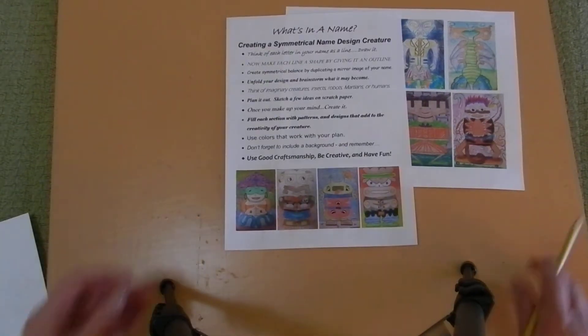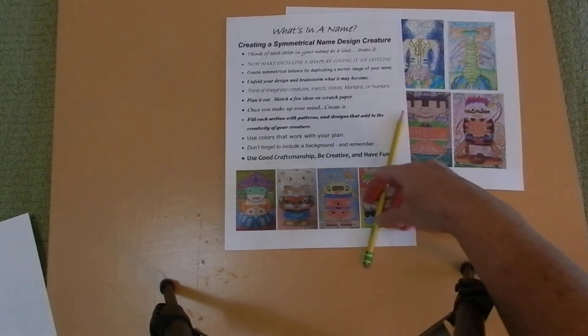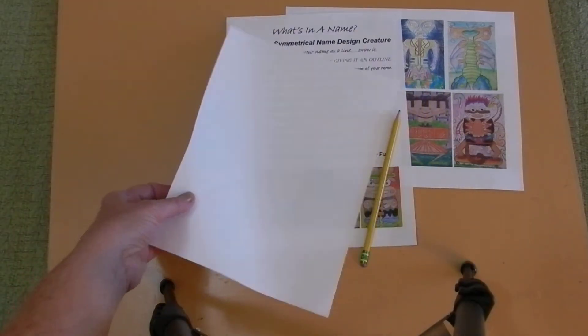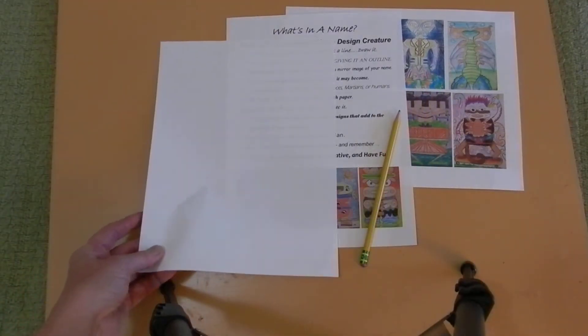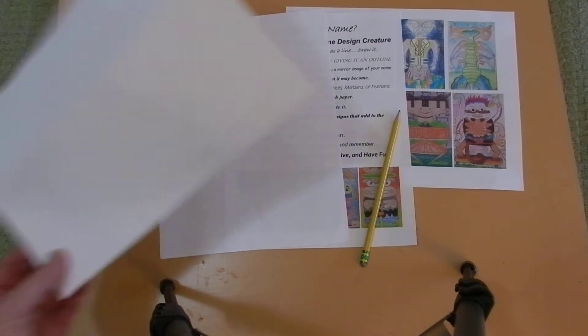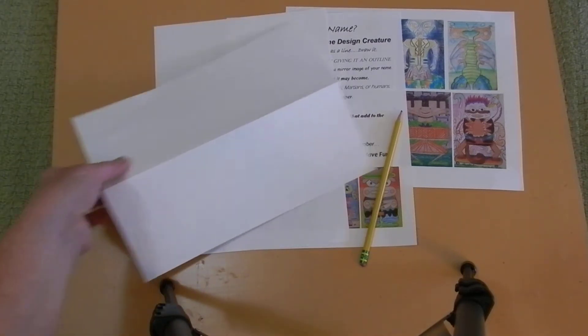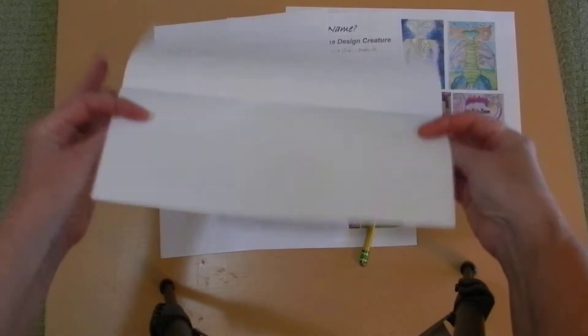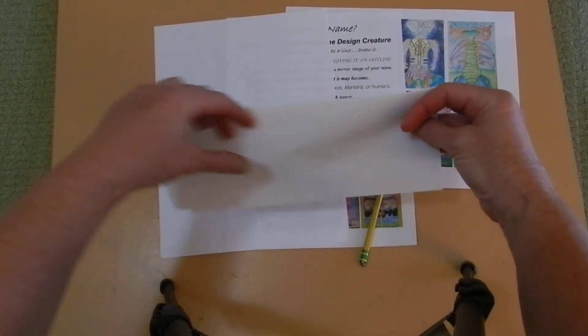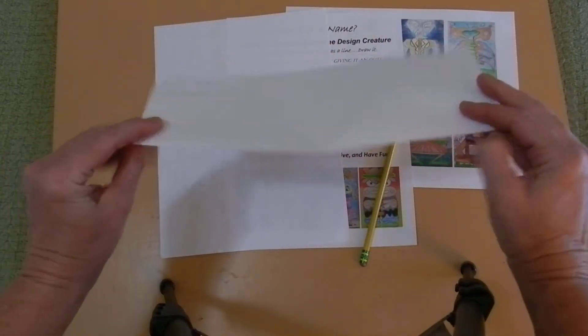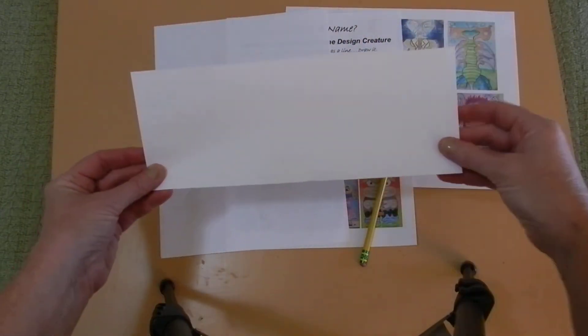For this portion of the lesson I need a couple of pieces of copy paper and you can have as many as you would like. I am starting off with a few and I'm going to take my piece of copy paper and I'm going to fold it in half lengthwise. I want it to be long and narrow.